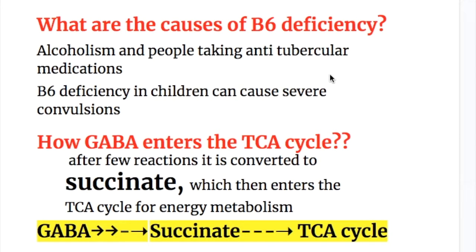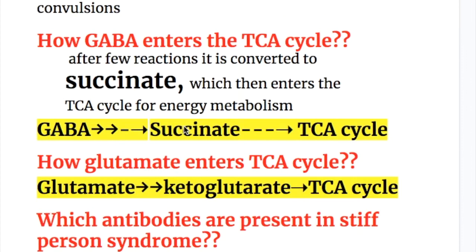Vitamin B6 (pyridoxine phosphate) is required as a cofactor to convert glutamate into GABA. A deficiency of vitamin B6 can lead to a decrease in the production of GABA. Causes of B6 deficiency include alcoholism and people taking anti-tubercular medications. B6 deficiency in children can cause severe and fatal convulsions.